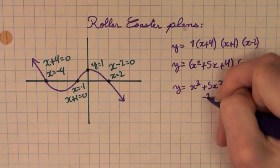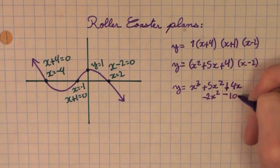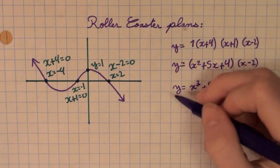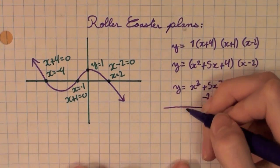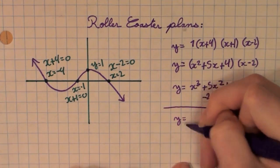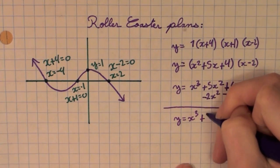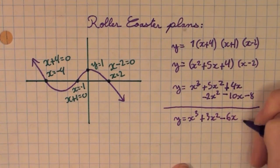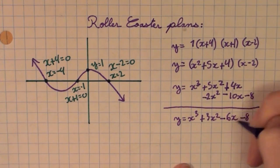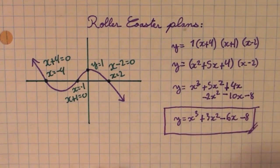So, we have negative 2X squared and negative 10X and negative 8. Then, we can combine like terms and get Y equals X cubed plus 3X squared minus 6X minus 8. And that is our answer.